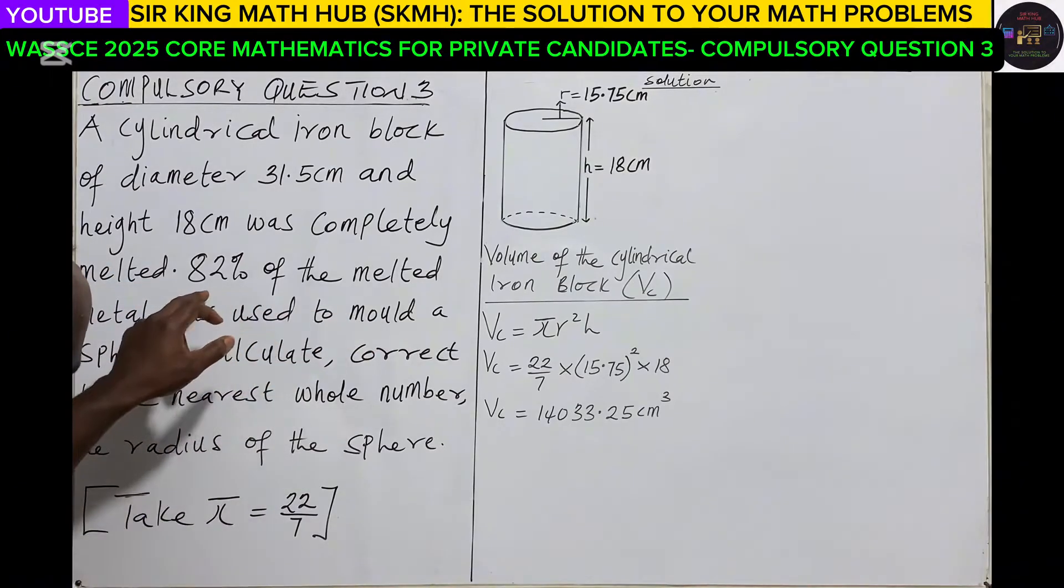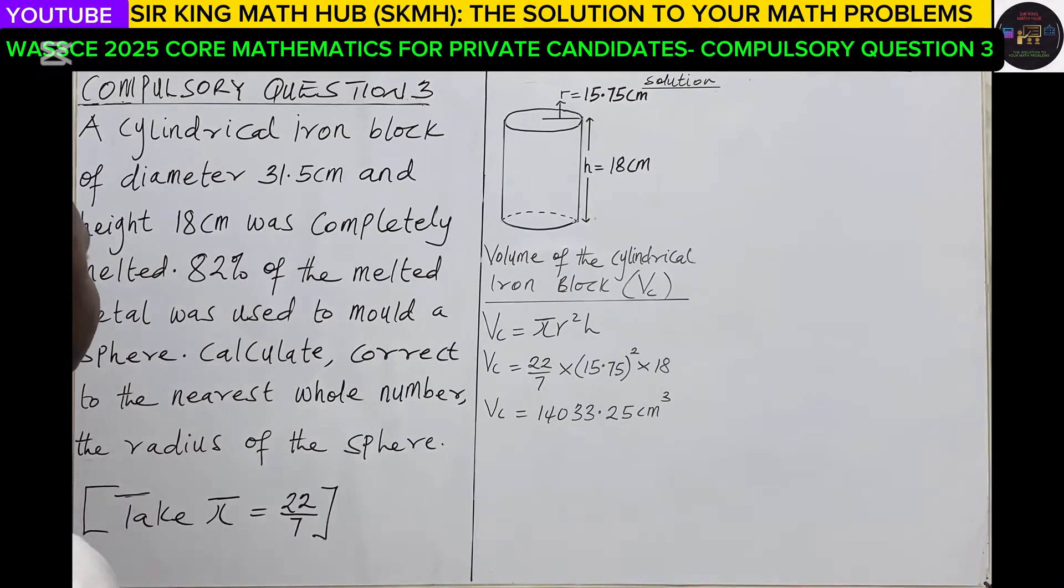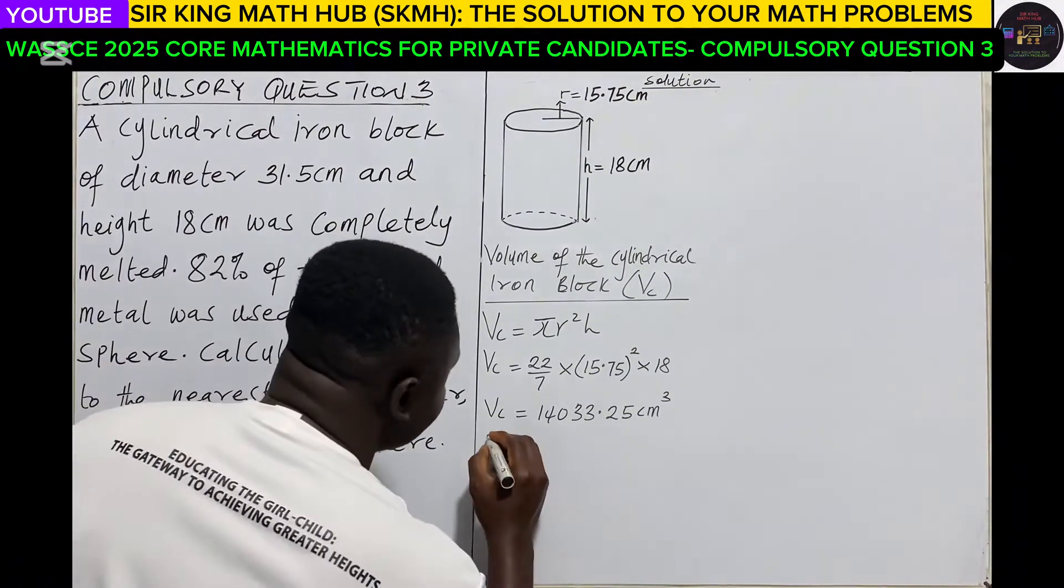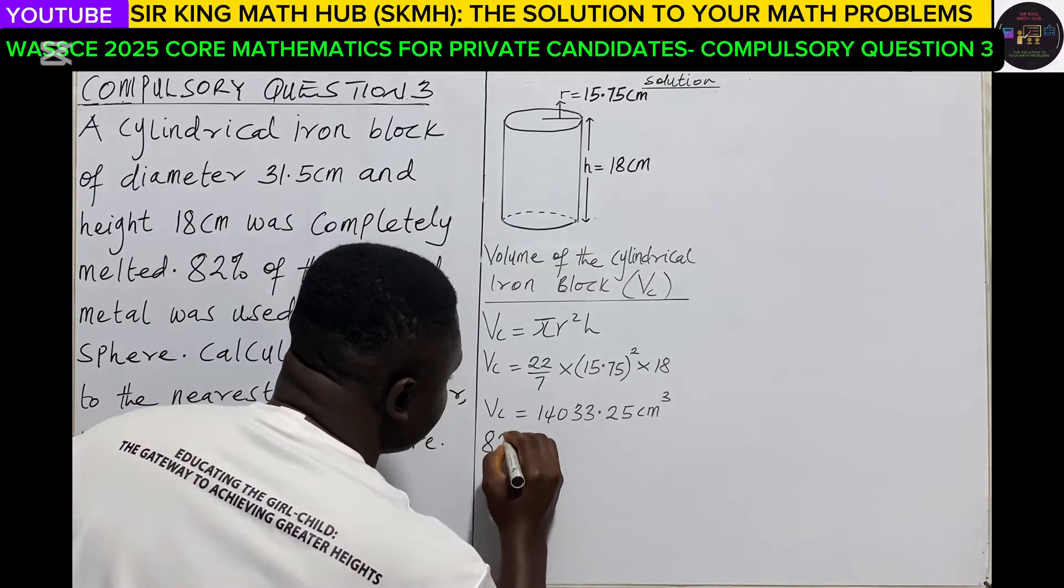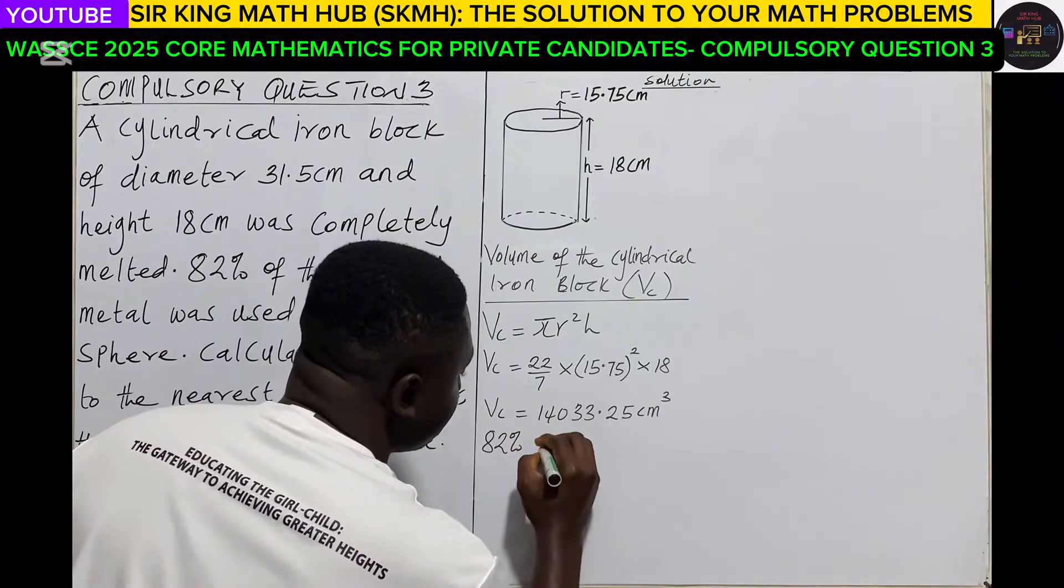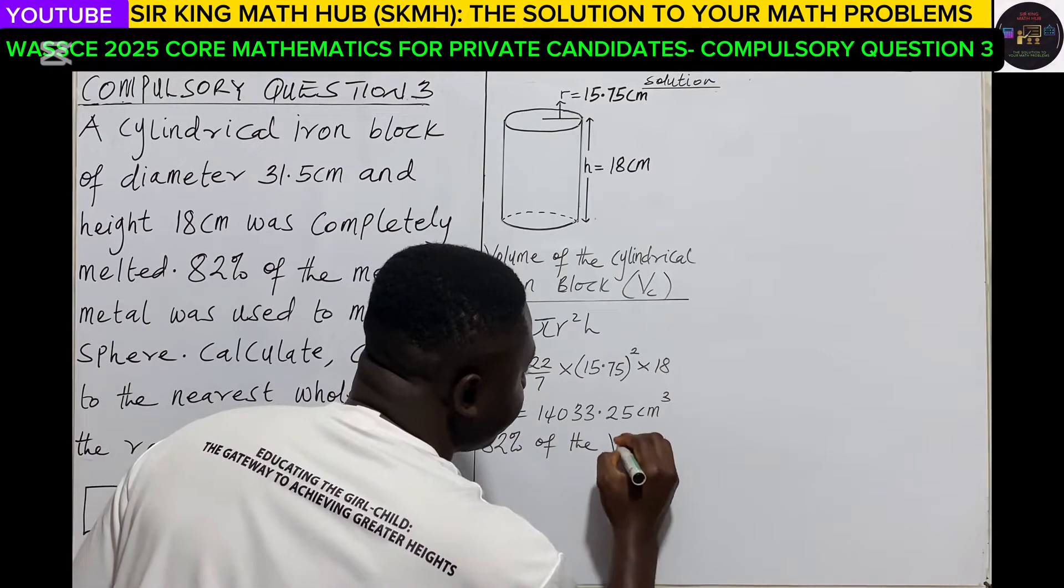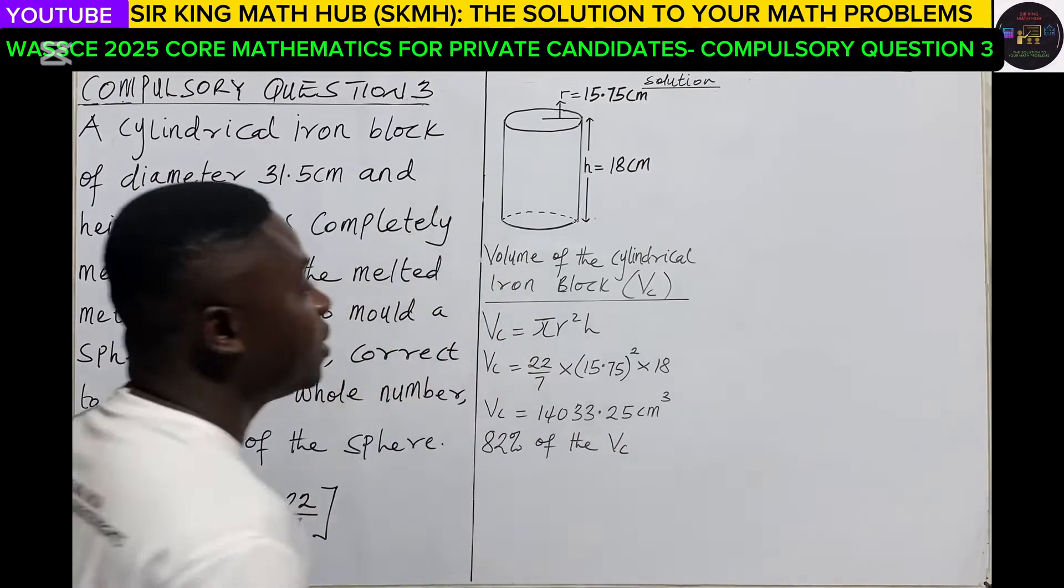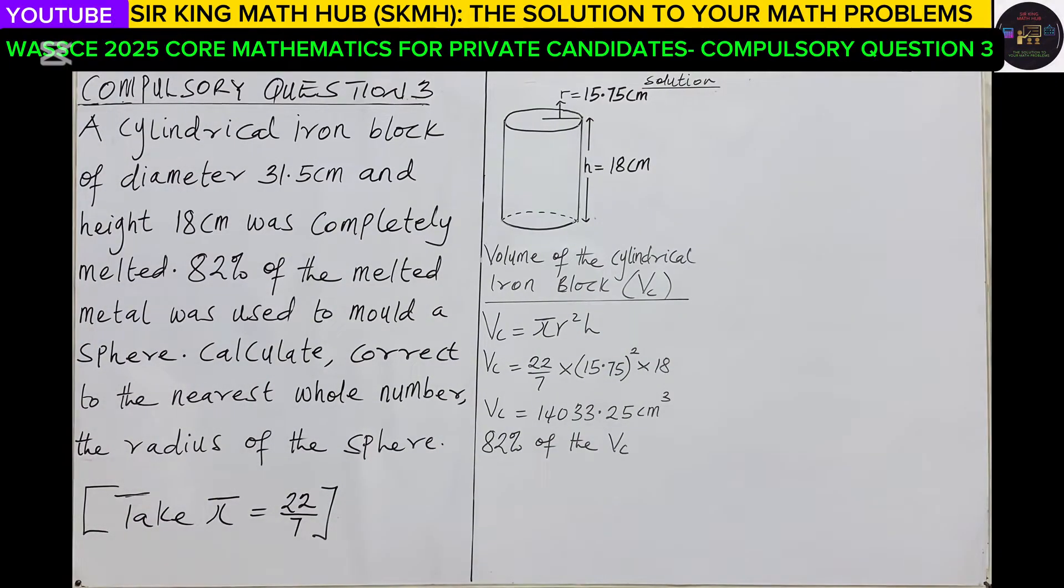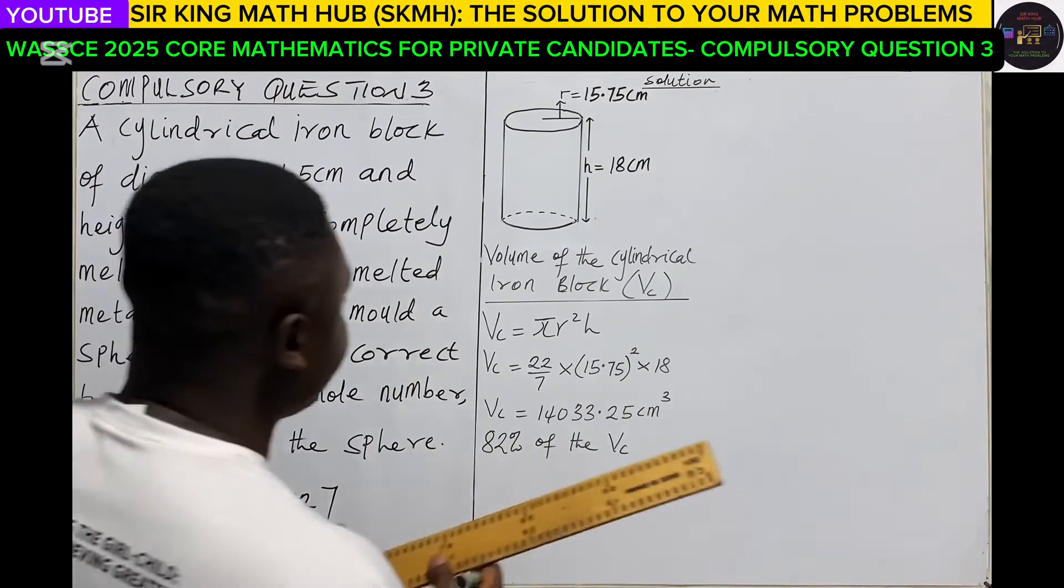So now after that, what happened? They used 82% of the melted metal to mold a sphere. So now let's find 82% of the volume of the cylindrical iron block.